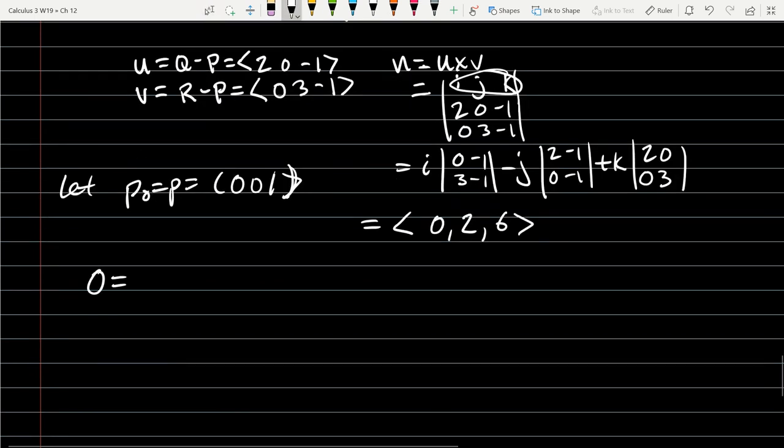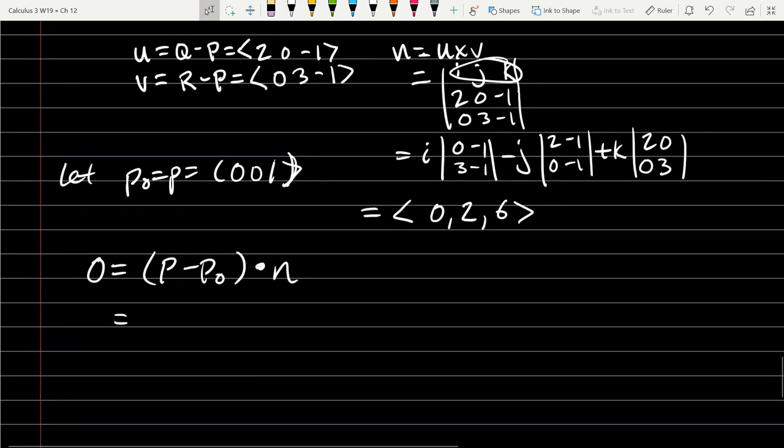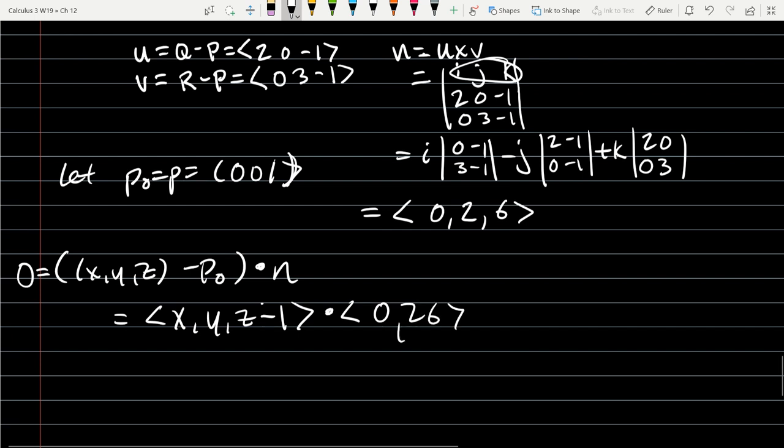And then we have 0 equals P minus P0 dot N. Oh, so now we're using P to mean two different things. That's definitely not good. P is supposed to be any point out there. So it should be x, y, z. That's any point in R3 minus P0, which is a very specific point. So we've got x minus 0, y minus 0, z minus 1. Alright, so that's subtraction right there. Dot N, which is 0, 2, 6. This is equal to 0.